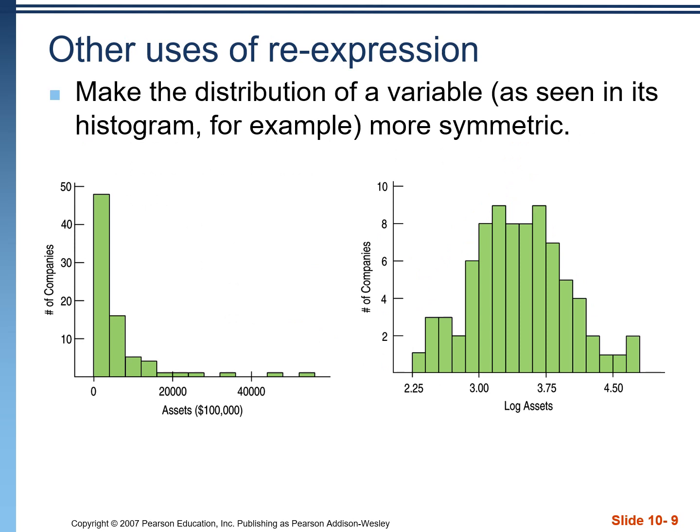And lastly, one of the other benefits of re-expression is that it doesn't just work for scatterplots. It also works for other things like equalizing spread, making distributions more symmetric. So here we have a distribution showing assets. This is in hundreds of thousands of dollars, very skewed to the right. But if we take the log of all those values, in this case, we took the log of the X, and we have an approximately normal straight shape, which we can find Z-scores for, used to find normal probabilities, et cetera.